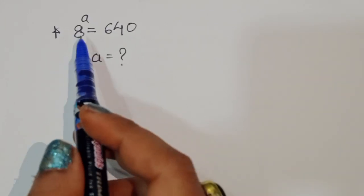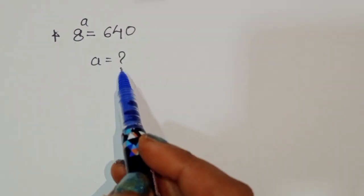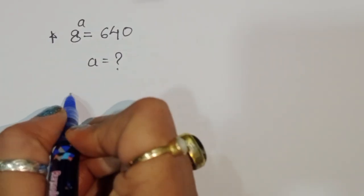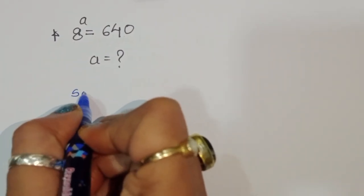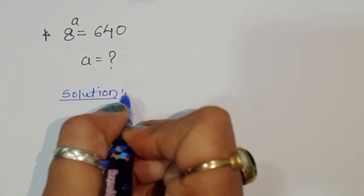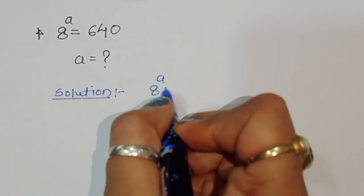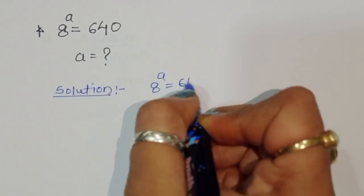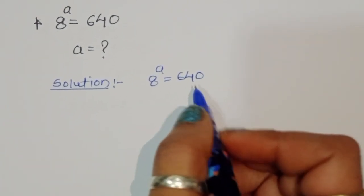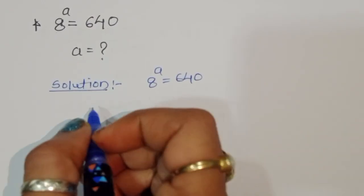The question is: given 8 power a is equal to 640, we have to find out the value of a. Let's see the solution — we can solve this question by taking log on both sides.